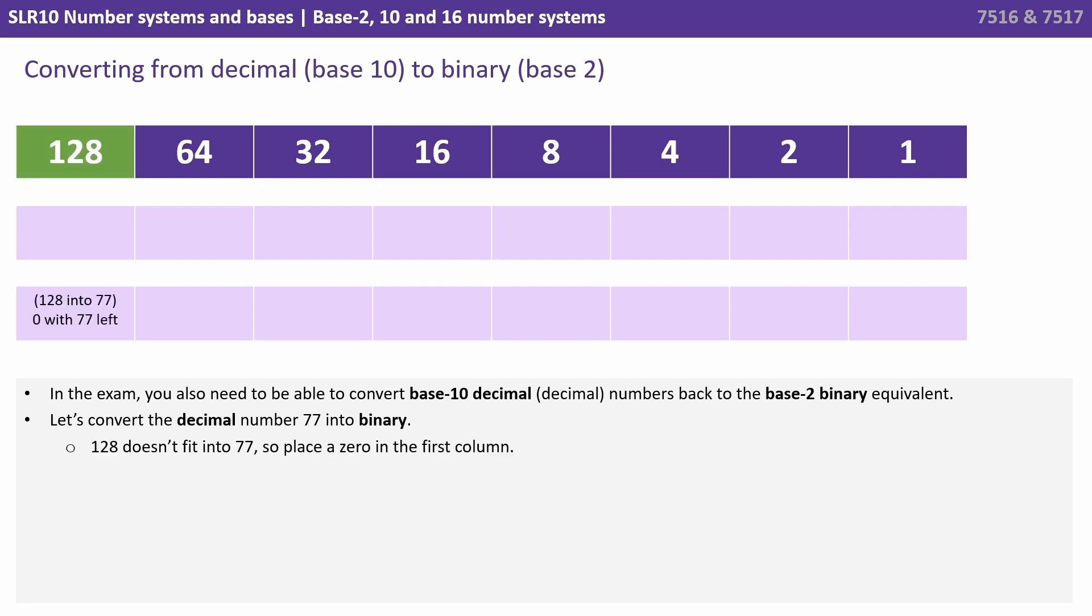We start on the left hand side with a column that has the most significant column weighting, and that's 128. Now remember the number we're trying to store in decimal is 77. So this column holds the value 128. Well we look at how many 128s will fit into 77, and the answer is 0. So we still have got 77 left over and we write a 0 here. The next column is 64. Well 64 will fit into 77 once. So we write a 1 here and what we have left is 13.